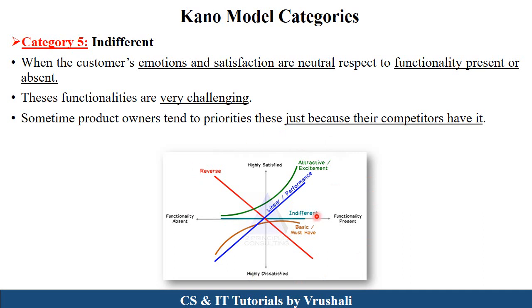Let's revise the Kano model. Basic and must-have: if present, customer is satisfied; if absent, customer is highly dissatisfied. Attractive and excitement: if present, customer is highly satisfied; if absent, customer is in a neutral state. Linear performance: if present, customer is highly satisfied; if absent, customer is dissatisfied. Reverse: customer didn't want this functionality, so if present, customer is highly dissatisfied; remove it and customer is highly satisfied. Last one is the neutral or indifferent state.